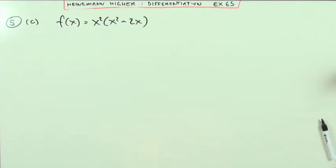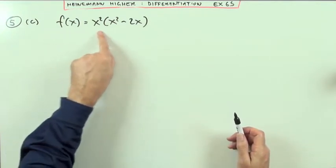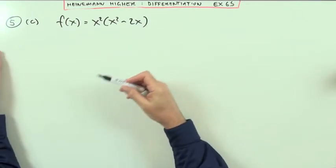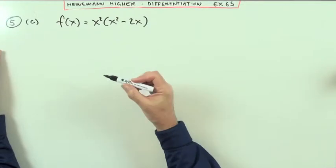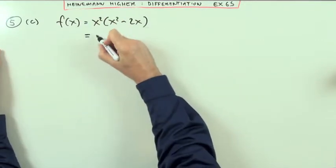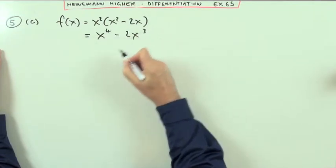Again it says find the stationary points, whereas this is a function that's expressed as, you should say, find the stationary values and the corresponding values of x, and then the nature of that stationary value. But it's not ready to go, because I've got a product here, so x squared times them both, x to the 4 minus 2x cubed.